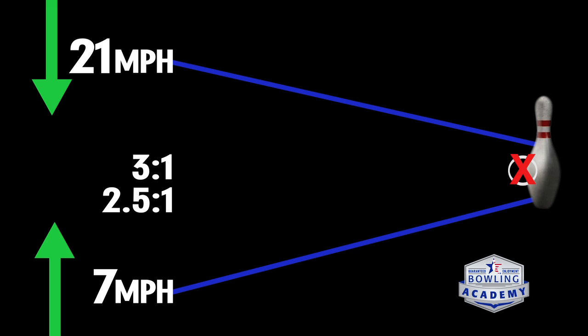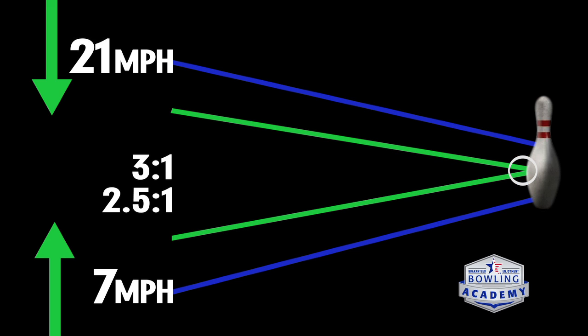So instead of going to 3 to 1, we might want to go to 2.5 to 1. That way the ball has a chance to match up going into the pins, and that's what we call the release ratio.